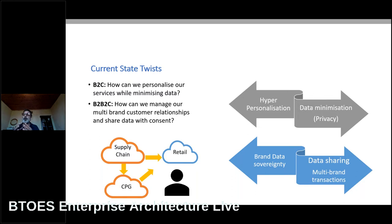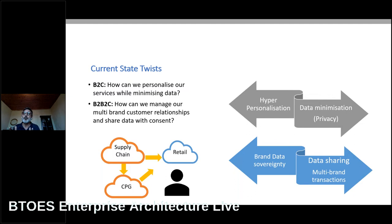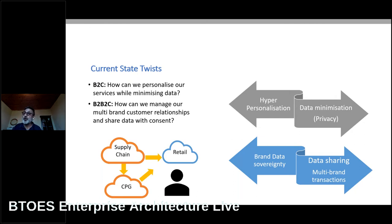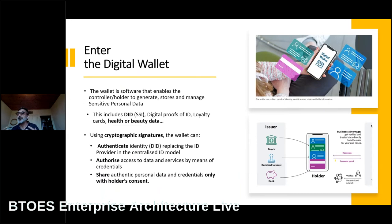A Number Seven product can be bought at boots.com and the customer can apply a Boots Advantage loyalty card as well. Number Seven is just as interested in how the product is selling and who's buying it as the retailer is — but the retailer takes first position on the customer data. We go to market through Walgreens and Boots Alliance, as well as direct to consumer, and data sharing is a real problem for us to resolve. The question is: how can we manage our multi-brand customer relationships and share data with consent? This is a real-world problem Walgreens Boots Alliance effectively has to face.